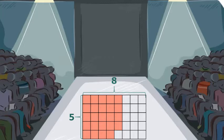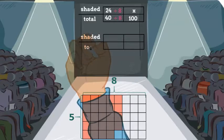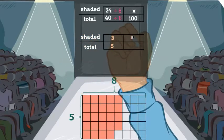For example, in this rectangular model, the ratio of shaded squares to total squares is 24 to 40. Since percent means per 100, I can find the percent by setting this ratio equal to x over 100. However, before we find the percent, I notice that I can simplify the first ratio by dividing the numerator and denominator by 8. This gives us 3 over 5 equals x over 100.